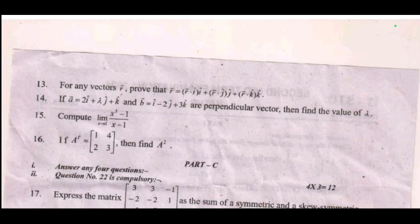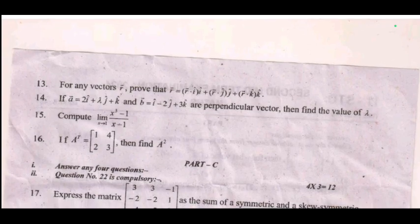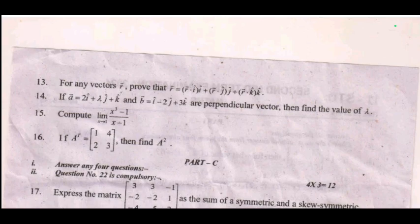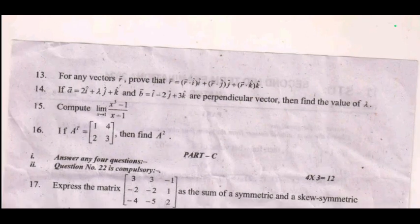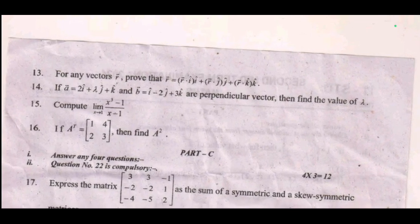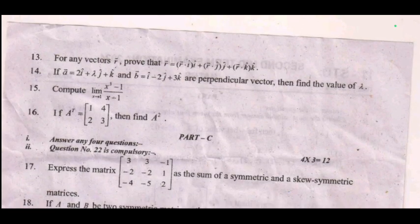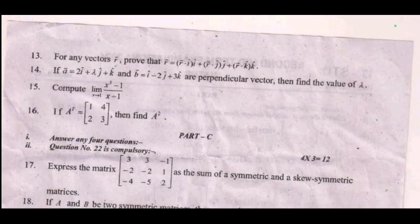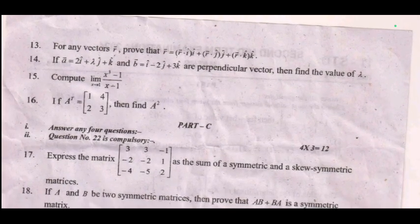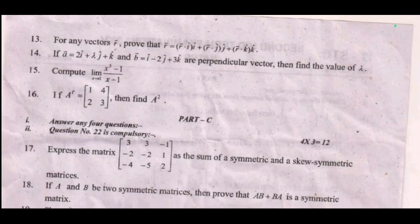Thirteenth one: for any vector r, prove that r vector equals (r dot i) i-hat plus (r dot j) j-hat plus (r dot k) k-hat. Fourteenth one: if vector a equals 2i plus γj plus k and vector b equals i minus 2j plus 3k are perpendicular vectors, then find the value of gamma.